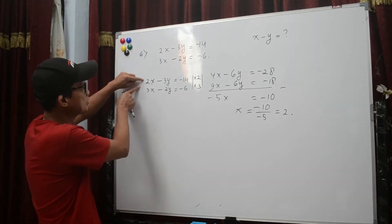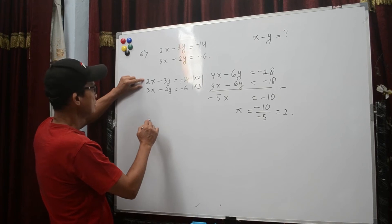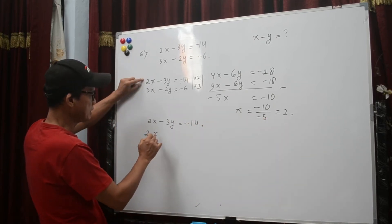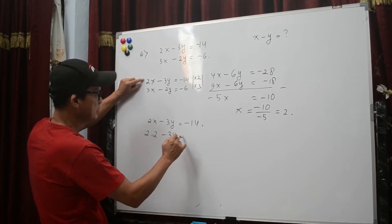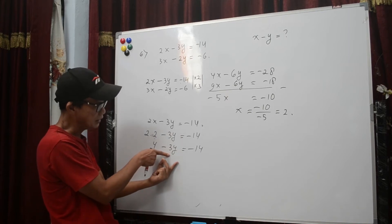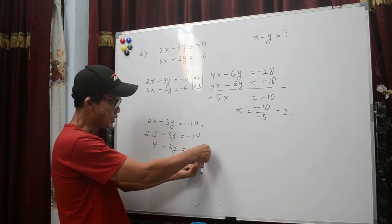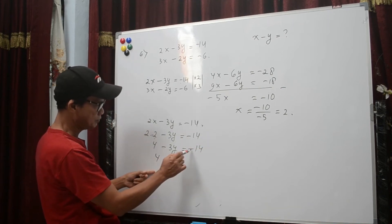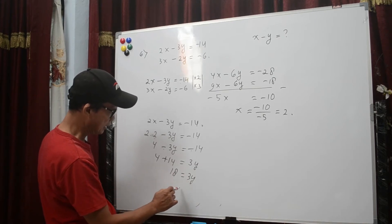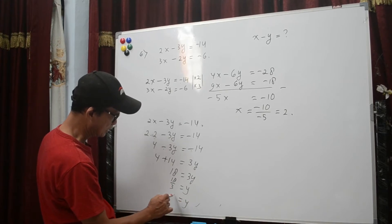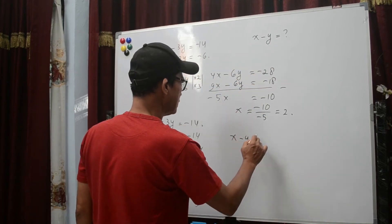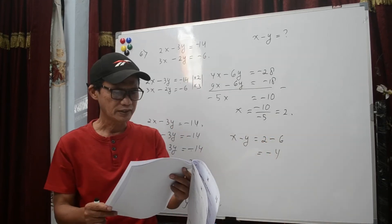Now what is the value of y? We substitute x into the first equation: 2 times 2 minus 3y equal to minus 14, so 4 minus 3y equal to minus 14. Moving terms: 3y equal to 18, so y equal to 6. Therefore x minus y equal to 2 minus 6 equal to minus 4. The answer is C!